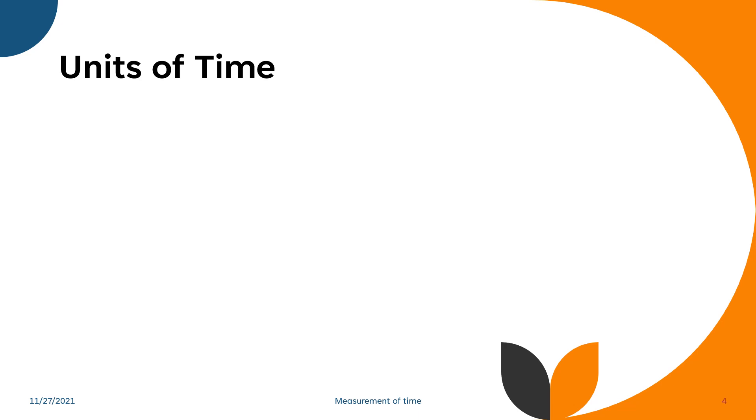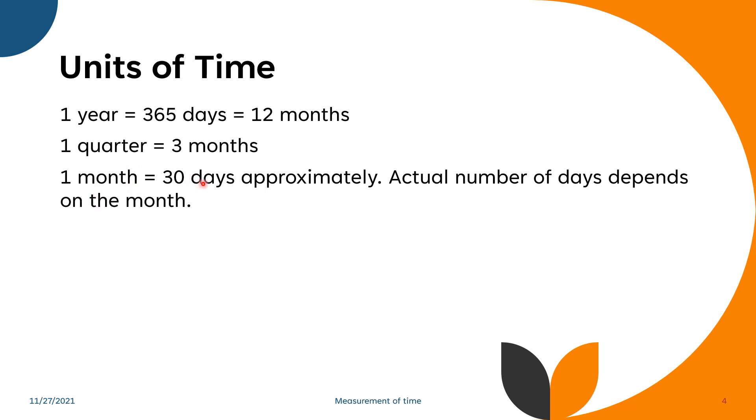The units of time: One year is equal to 365 days or equal to 12 months. One quarter is equal to three months. One month is 30 days approximately; actual number of days depends on the month. One week is equal to seven days, and one day is equal to 24 hours. One hour is equal to 60 minutes, and one minute is equal to 60 seconds.